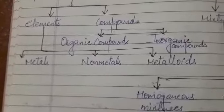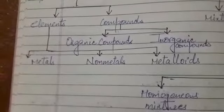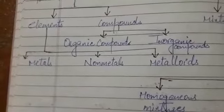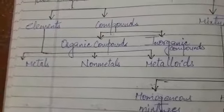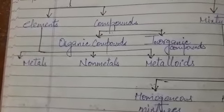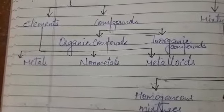Metalloids include some very important examples such as silicon, arsenic, antimony, germanium, bismuth, etc.